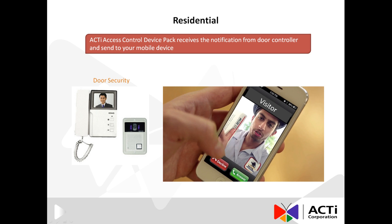One example of ADP's residential application is the integration with your door controller or mobile device. When the door controller alerts the ADP that there is someone at the door, the ADP can send a notification to the resident's mobile device, along with footage from the door camera alerting the resident of the situation.